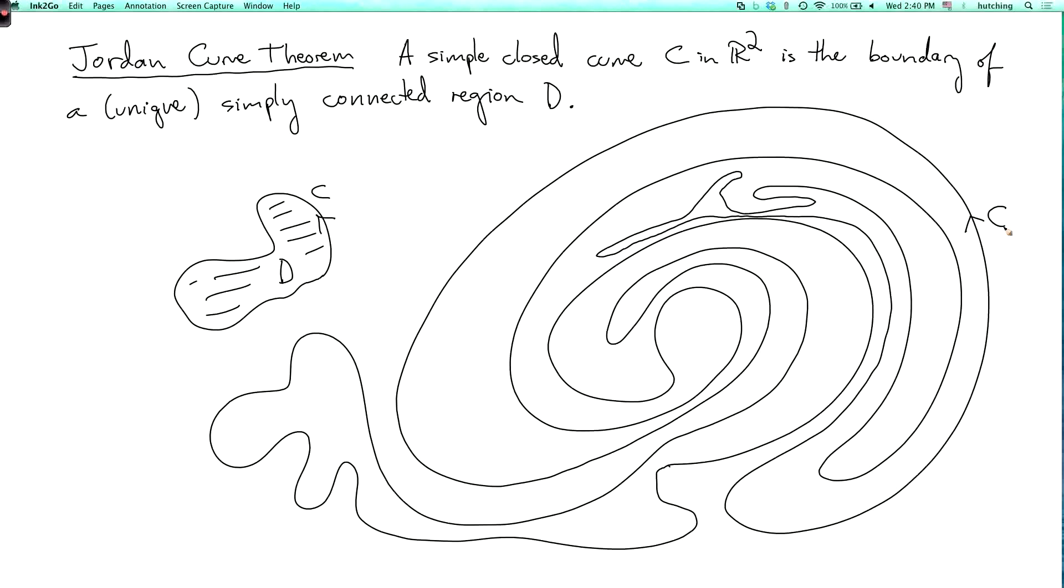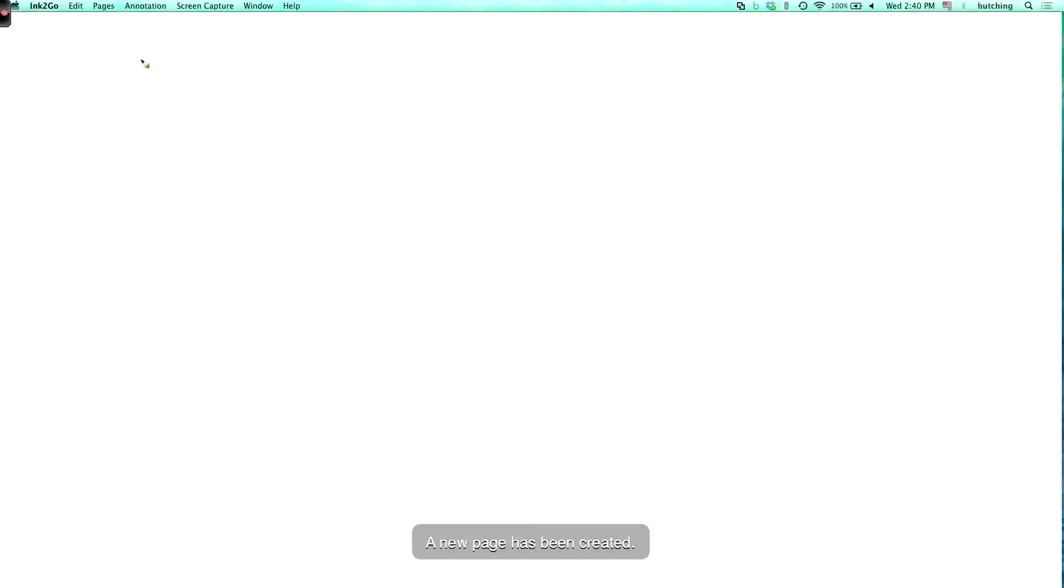Now, given this fact, let C be a simple closed curve in the plane, and let D be the simply connected region that it bounds. Well, actually, there's only one region that it bounds, and it's simply connected.